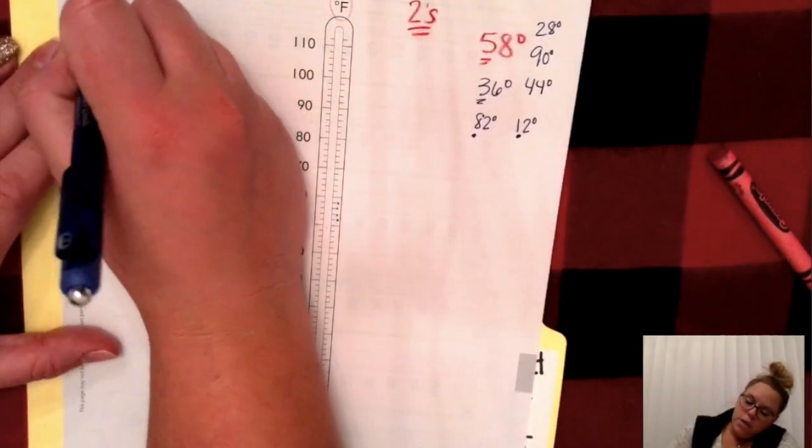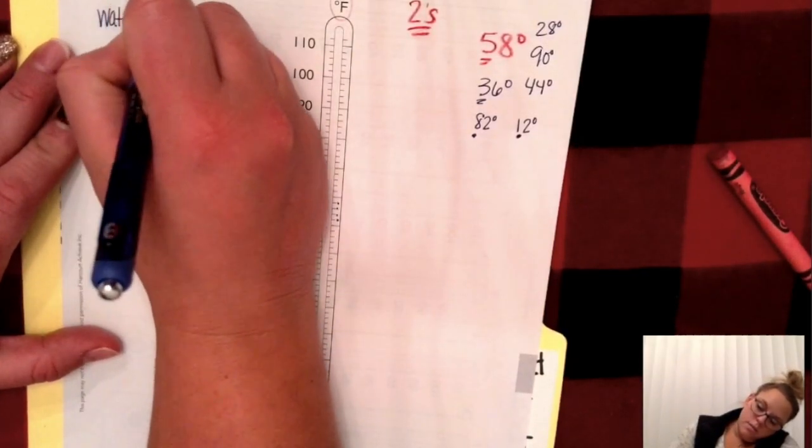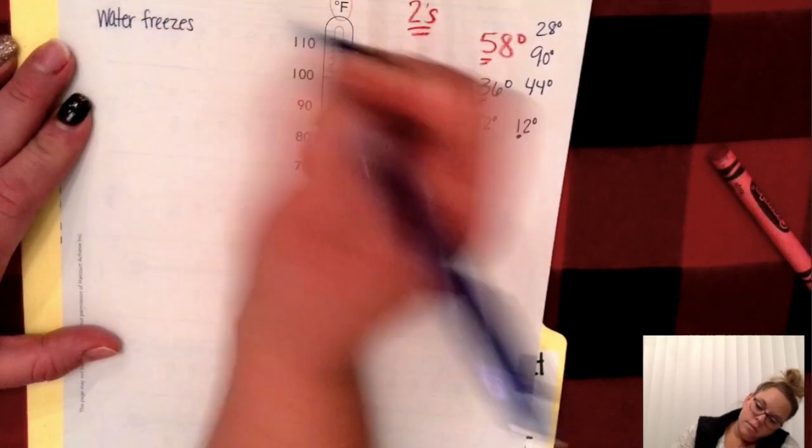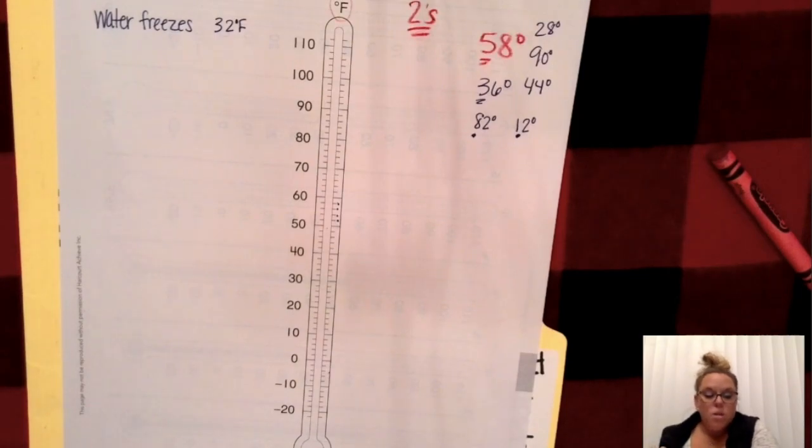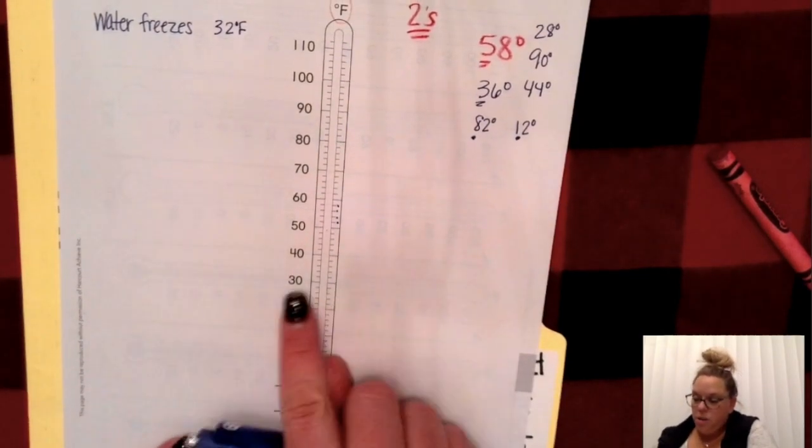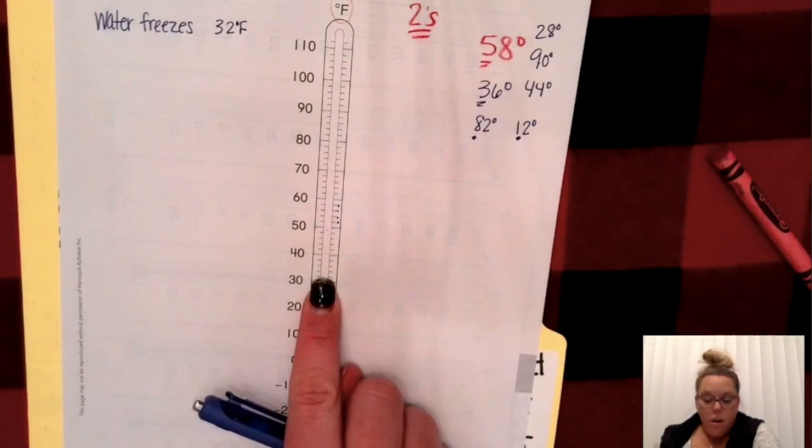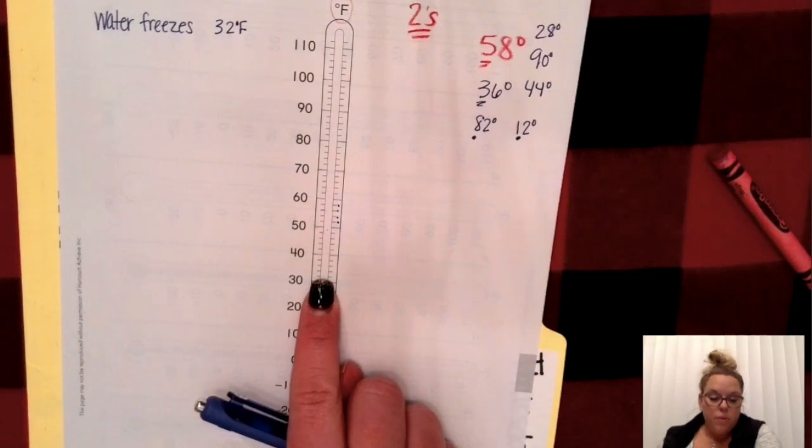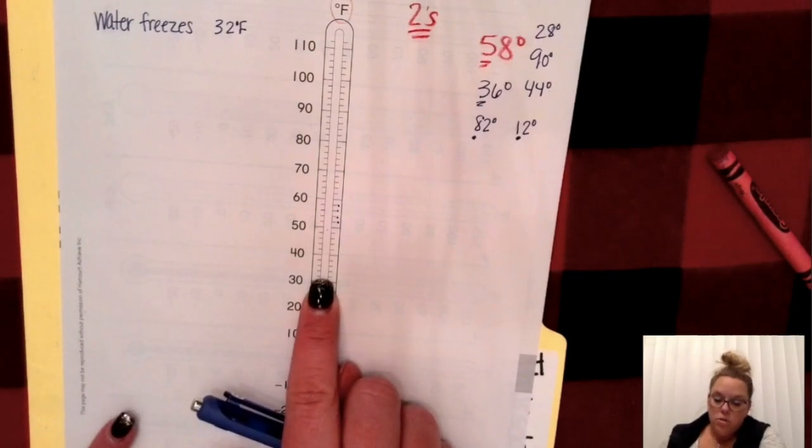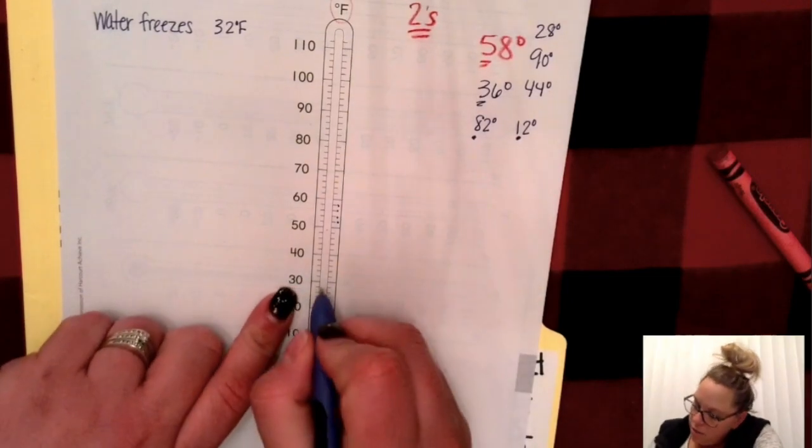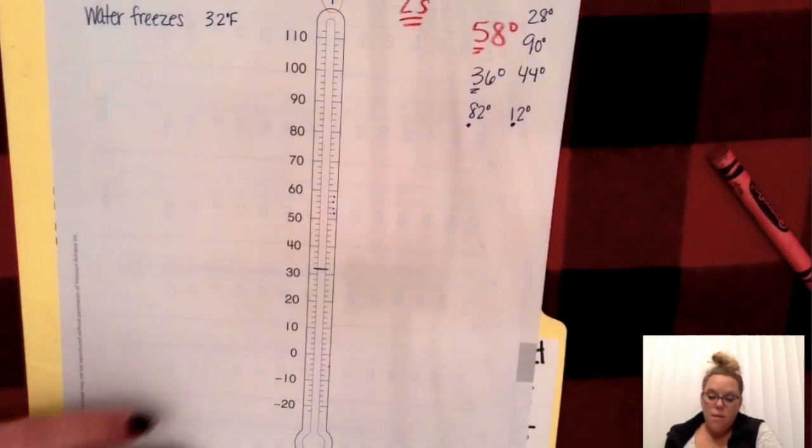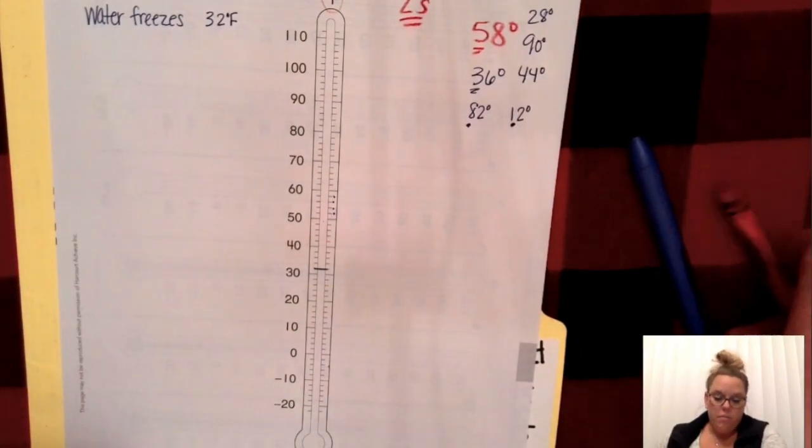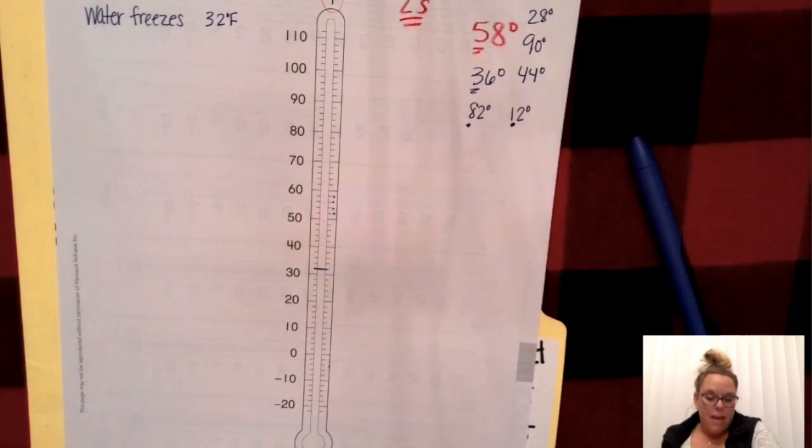Now, water freezes at 32 degrees Fahrenheit. So what we're going to do is we're going to point to the number 32. Here's 30. We're going to color this thermometer to show the temperature at which water freezes. So use your pencil to draw a line across your thermometer at 32.